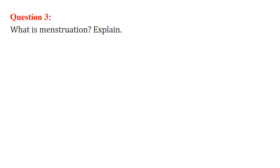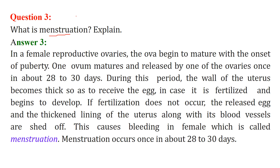What is menstruation? In females there is a particular time when they bleed. Menstruation is a natural phenomenon. In female reproductive ovaries, the ova begins to mature with the onset of puberty.